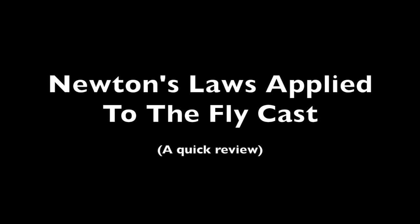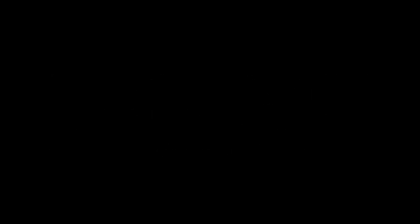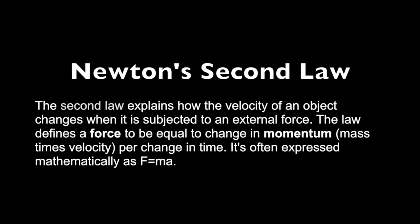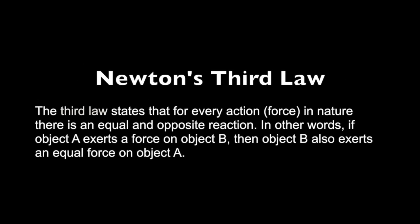Let's review those laws as they relate to the fly cast. Newton's first law says that an object will remain at constant motion until acted upon by a force, so the fly leg maintains its speed until something stops it — namely the rod leg. Newton's second law means that any force applied to the line will produce some acceleration, changing its state of motion. Newton's third law says that for every action there's an equal and opposite reaction — for instance, when the fly leg pushes on the rod leg, the rod leg pulls back on the fly leg.